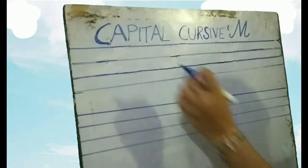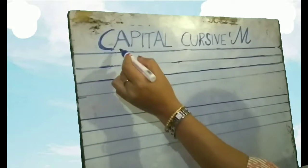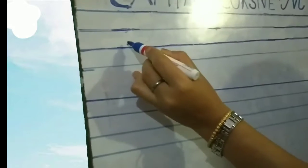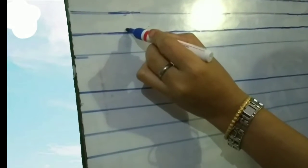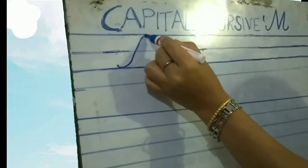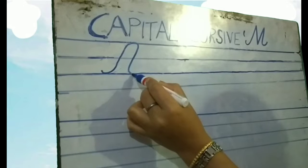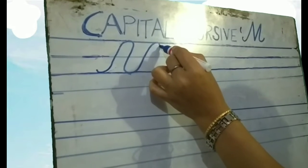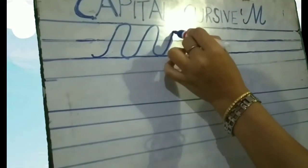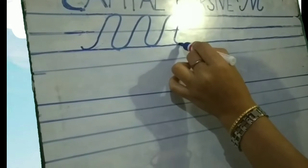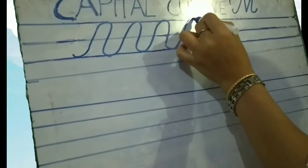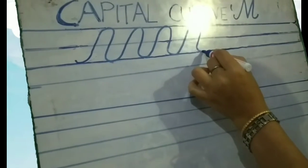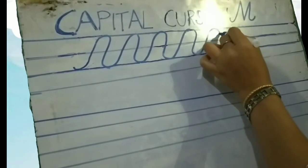Before writing capital cursive M, we are going to learn some strokes. You have to start from above the third line. From here it goes up, then comes back down touching the third line, again goes up to the first line, then bring down. You keep doing this — bring up, touching the first line, bring down touching the third line.